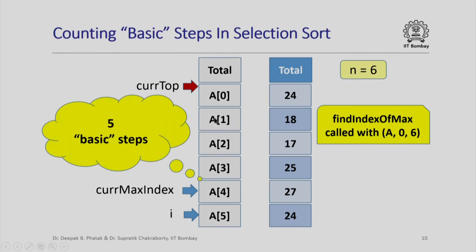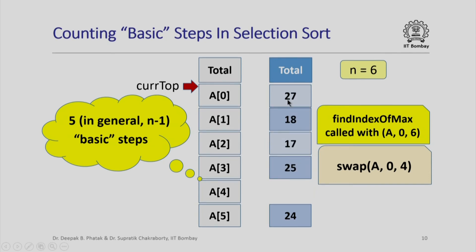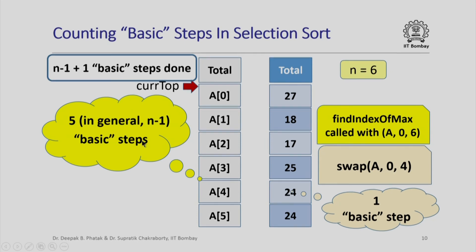For each of a[1] through a[5] I did a comparison and update if necessary — so I executed five basic steps in find_index_of_max. In general, for an array of n elements, the first iteration executes n-1 basic steps. In addition, I need to swap current_max_index with current_top, which is one more basic step. So in total the first iteration costs n-1 basic steps inside find_index_of_max plus one basic step inside swap.